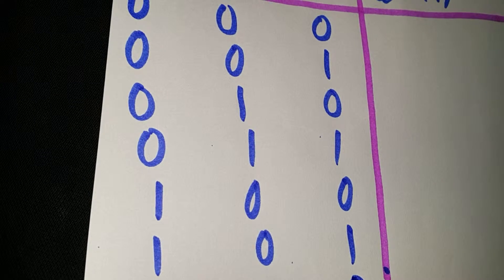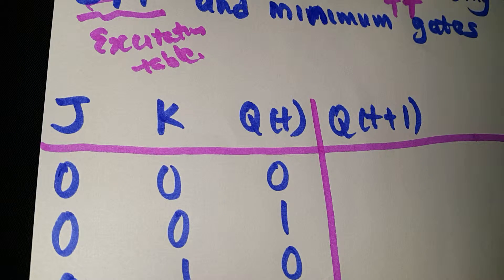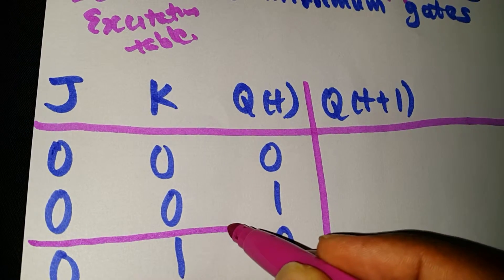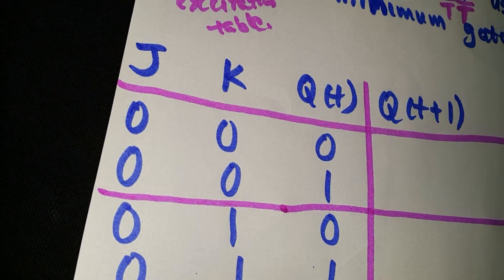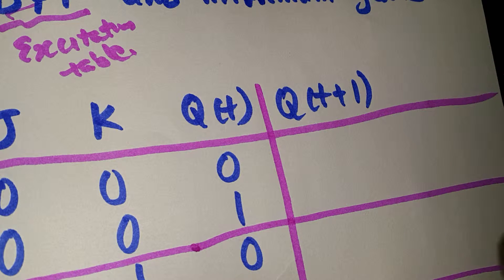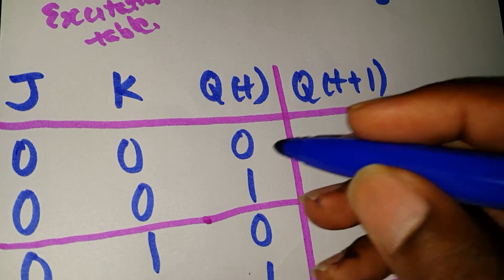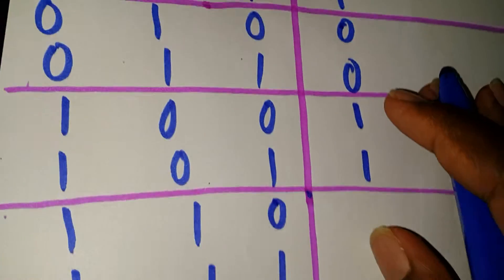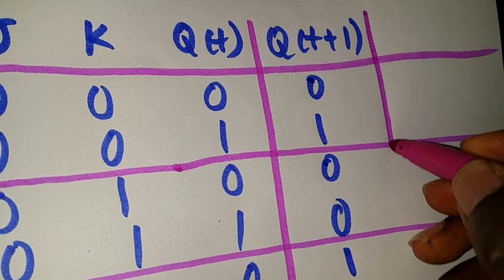And one-one-one gives zero, and one-one-one gives one. We already know the truth table for the JK flip-flop. For the JK flip-flop truth table — you can check our previous video — we have: no change, zero-one means reset, one-zero means set, and one-one means toggling.